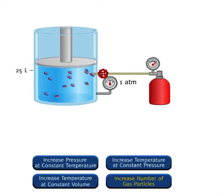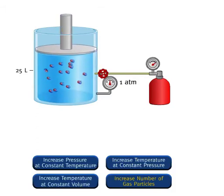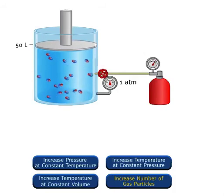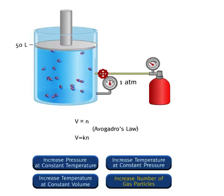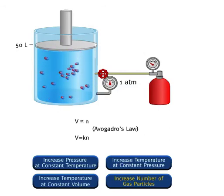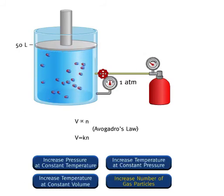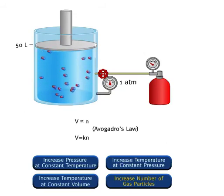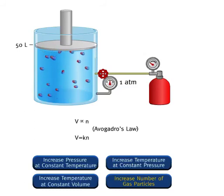Gas particles are entering the container. As the number of particles—or equivalently, the moles of gas—increases, the volume that the gas occupies increases. Volume is directly proportional to the number of moles of gas. We can write volume equals k times n, where n is the number of moles of gas and k is a proportionality constant. This relation is known as Avogadro's Law, which states that at constant pressure and temperature, the volume of the gas is directly proportional to the number of moles of the gas. When the moles of gas particles are doubled, the volume occupied by the gas is doubled correspondingly.